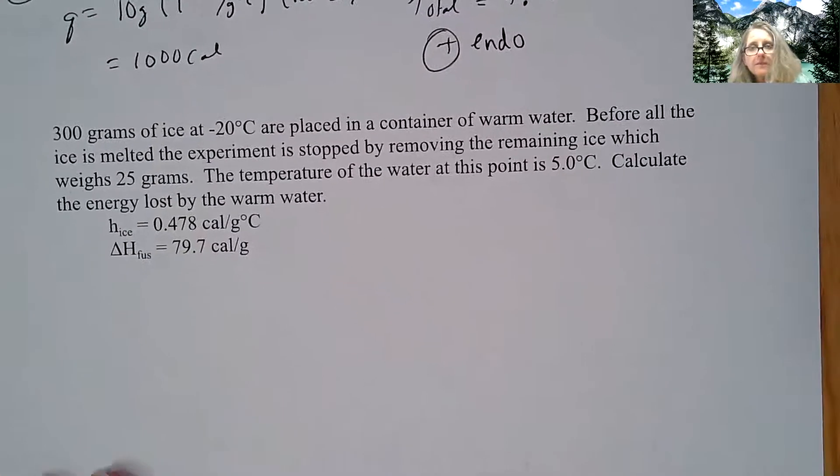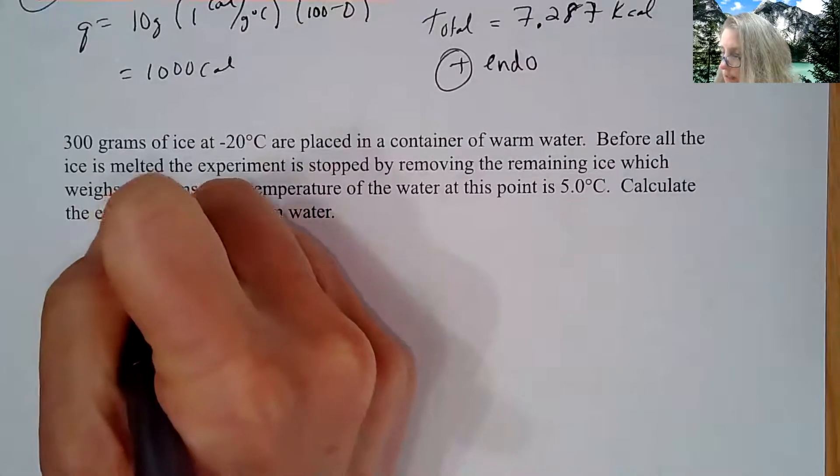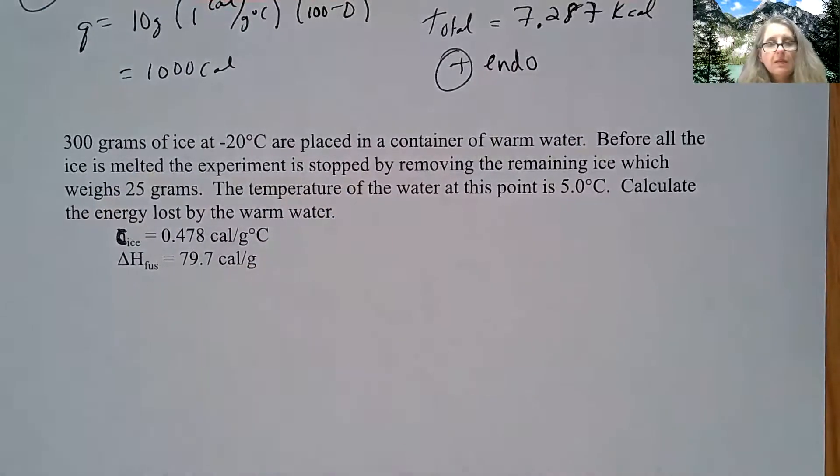So in this next problem, same kind of idea. I have 300 grams of ice at negative 20 are placed in a container of warm water. Before all the ice is melted in the experiment, it is stopped by removing the remaining ice, which weighs about 25 grams. The temperature of the water at this point is five degrees Celsius. Calculate the energy lost by the warm water. So this is your specific heat of ice there. And again, I would always give you these constants. So see if you could try it. I'm going to come back and show you the answer.